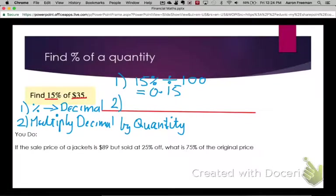Take our decimal which is 0.15 and multiply that by $35.